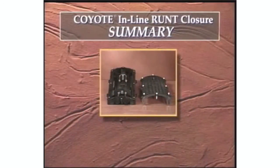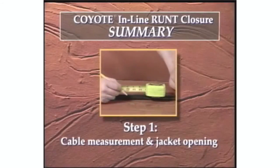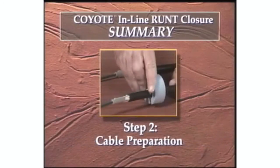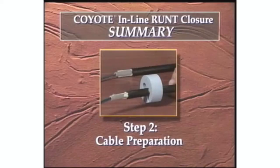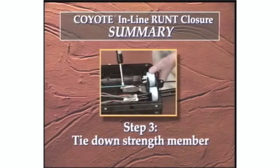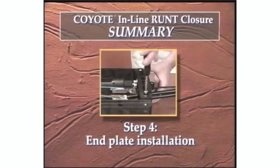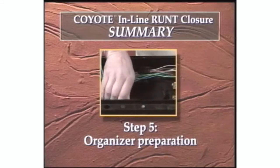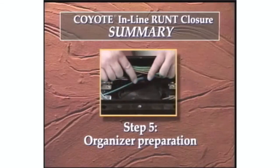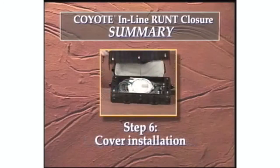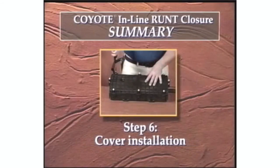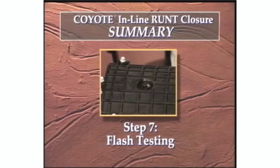In summary, follow these steps for a successful application of the Coyote inline run closure. Step 1 Cable Measurement and Jacket Opening, Step 2 Cable Preparation, Step 3 Tie Down Strength Member, Step 4 End Plate Installation, Step 5 Organizer Preparation, Step 6 Cover Installation, Step 7 Flash Testing.